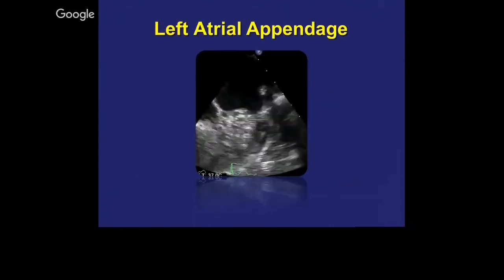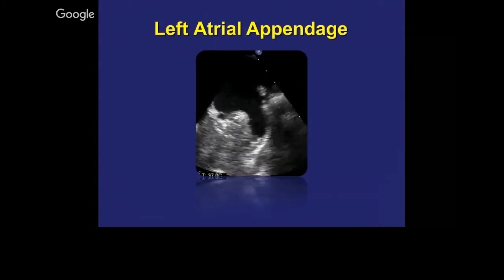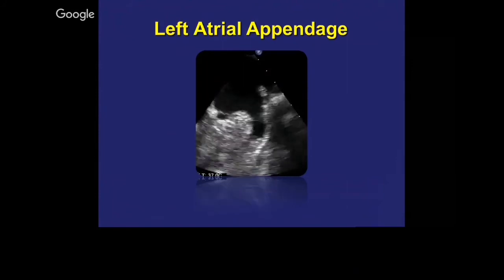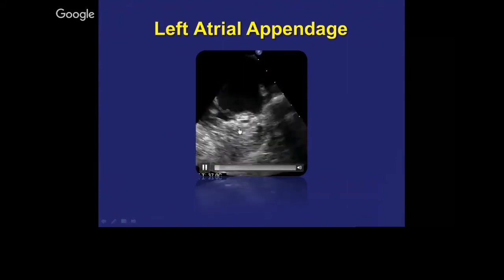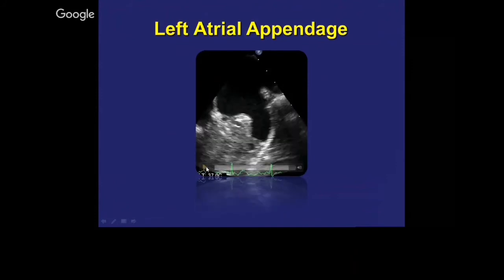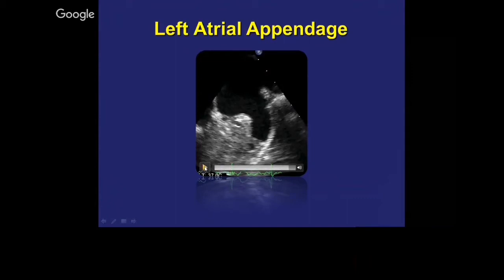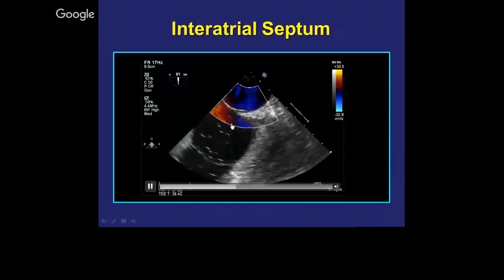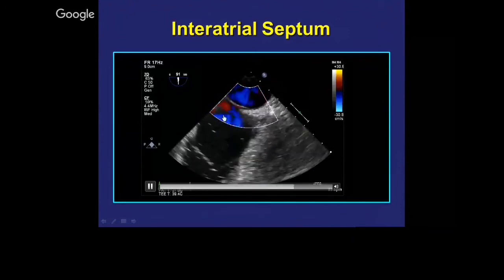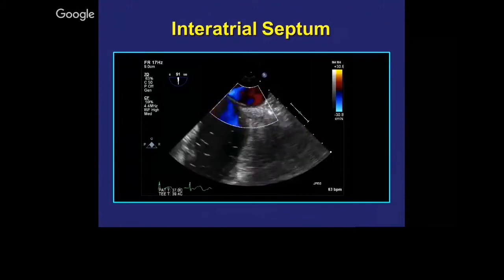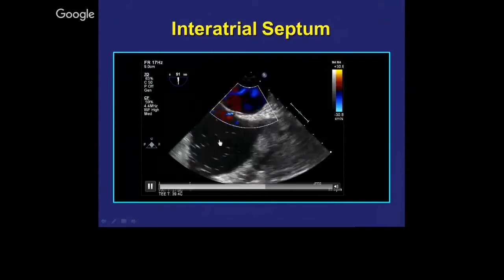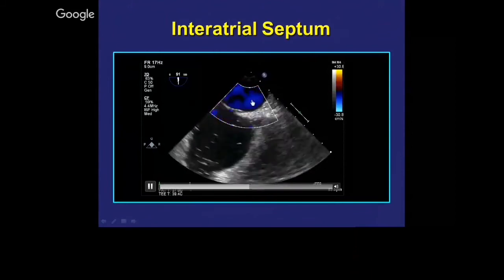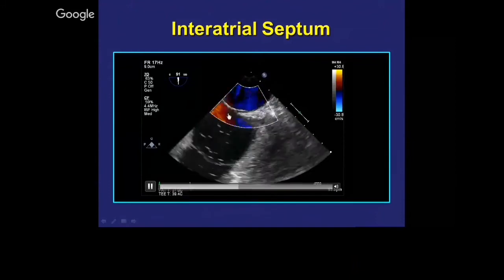A few other things that might interest the surgeon: the left atrial appendage. When you do your MAZE procedure and want to oversew the left atrial appendage, that is what it looks like. You look for thrombus in the left atrial appendage. That small black hole here is the left circumflex in short axis on the TEE. Also the interatrial septum — you're doing your ASD repair, PFO and so on. You can see there is flow going from left to right in this case. Sometimes even with a bubble study, it may be negative, and the only way to tell is because of color flow showing a flow from left to right in the septum.